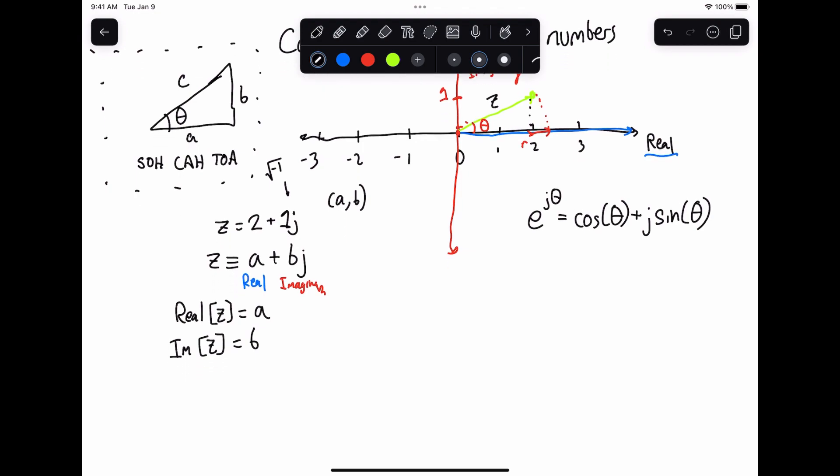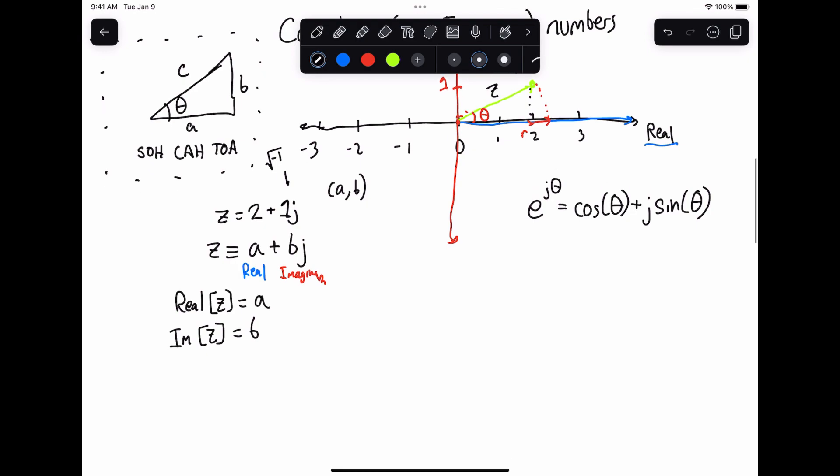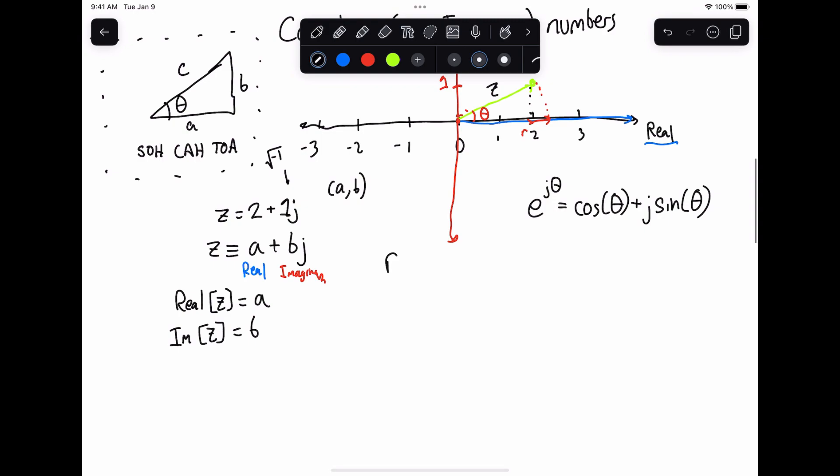So if we want to go from here in Cartesian form into polar form, and the polar form of a complex number is equal to r e to the j theta, where theta is the angle, and r is going to be your radius or the magnitude. So how do we do this?